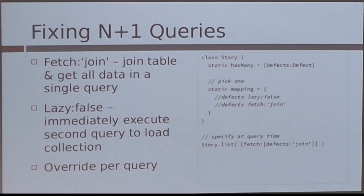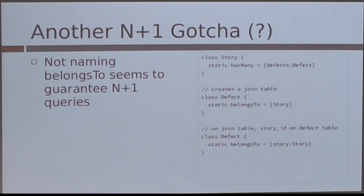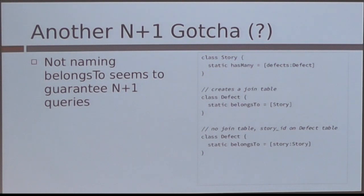However, if there's an area where you only want the story and not the defects, guess what? Now defects are always coming along for the ride. The fetch join will actually join onto the other query, while lazy false will just do a second query immediately. So depending on your scenario, one or the other may have better performance. One other thing: when you name your belongs-to, if you don't give it an ID and just do a static belongs-to for a story, it'll always create a join table. I was testing with fetch join or lazy false on this to solve it, and it didn't seem to — so I'm not 100% sure about this one.